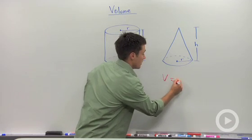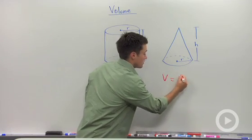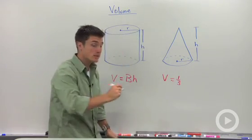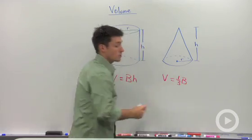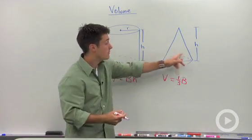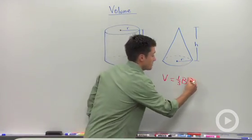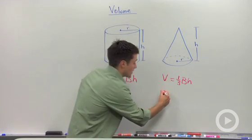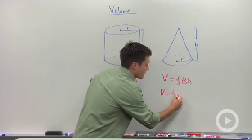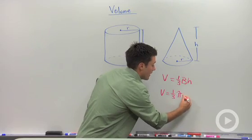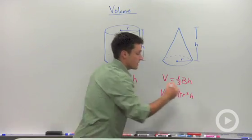So we can say that the volume of any cone is equal to one-third times the base area, which is going to be pi r squared since the base of a cone is a circle, times the height. So I could rewrite this in terms of a radius, we could say this is one-third pi r squared times h.